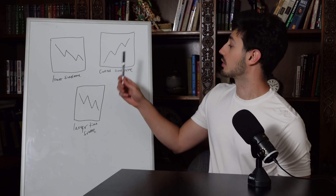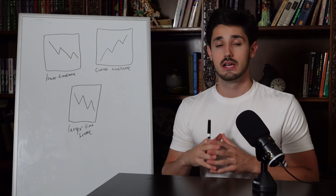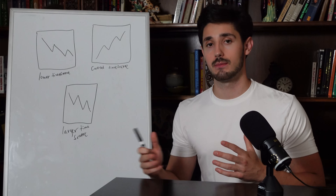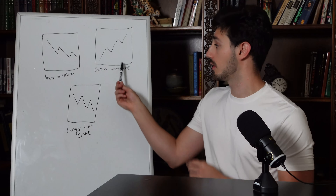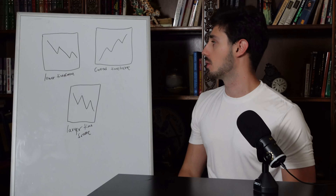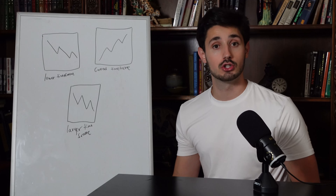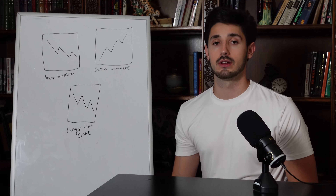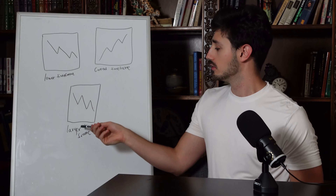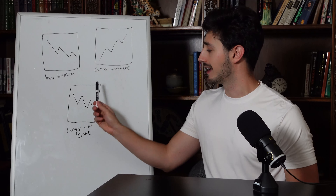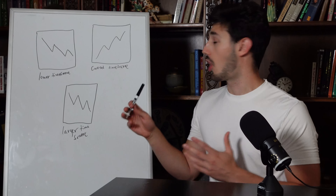On the whiteboard I've drawn three examples: a current time frame, a lower time frame, and a larger time frame. The general rule is to always look one time frame below and one time frame above the one you're currently trading. In this first example: the lower time frame is in a downtrend, the current time frame is in an uptrend — you're looking for a long — and the larger time frame is also in a downtrend.